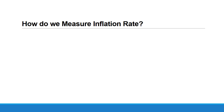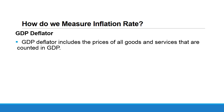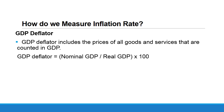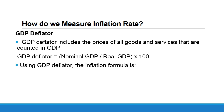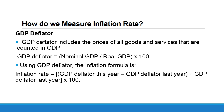Finally, we turn to another price index: the GDP deflator. The GDP deflator includes the prices of all goods and services counted in GDP: consumption (C), investment (I), government expenditures (G), and net exports (X minus M). GDP deflator equals nominal GDP divided by real GDP, times 100. We can then use the GDP deflator to measure inflation: inflation rate equals GDP deflator this year minus GDP deflator last year, divided by GDP deflator last year, times 100.